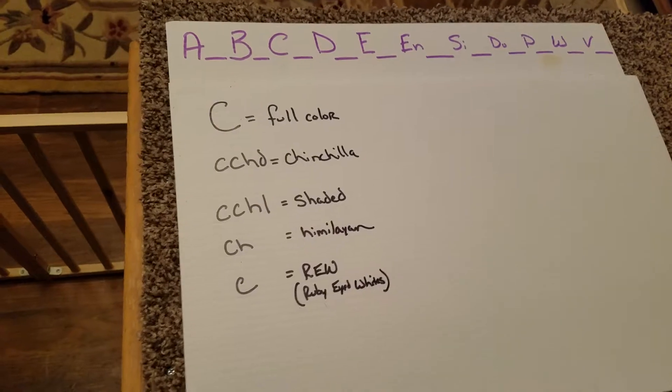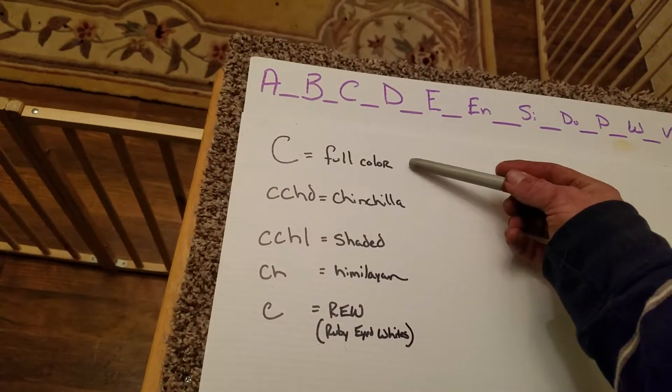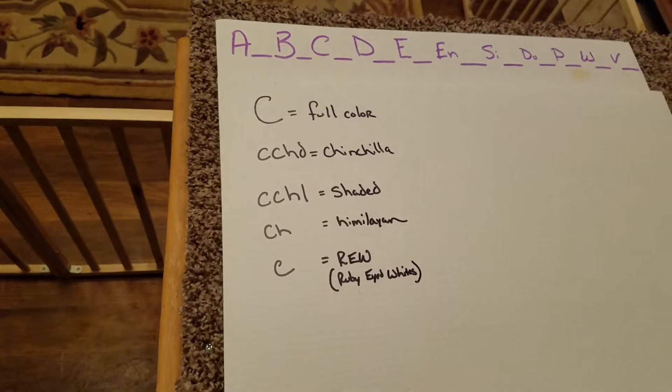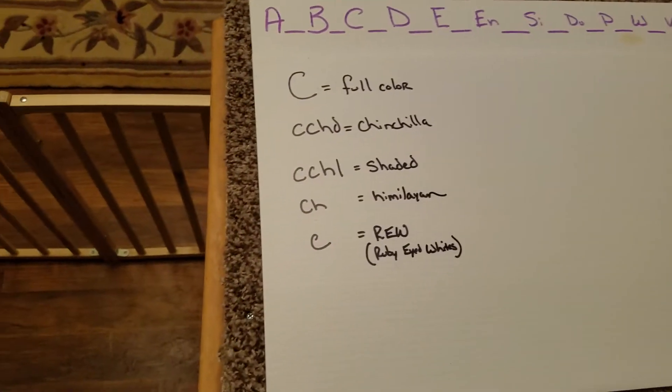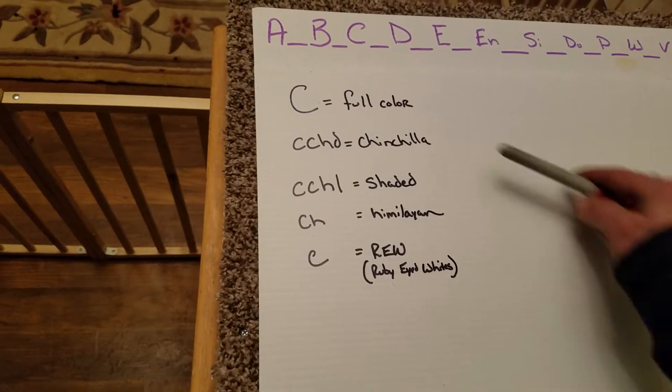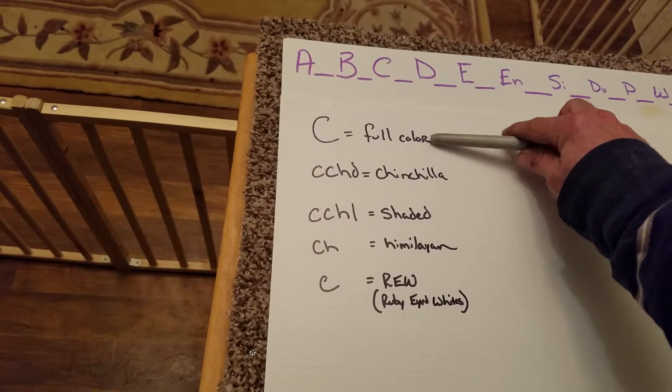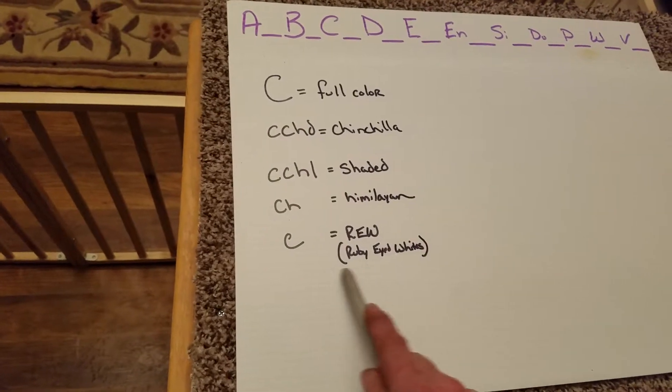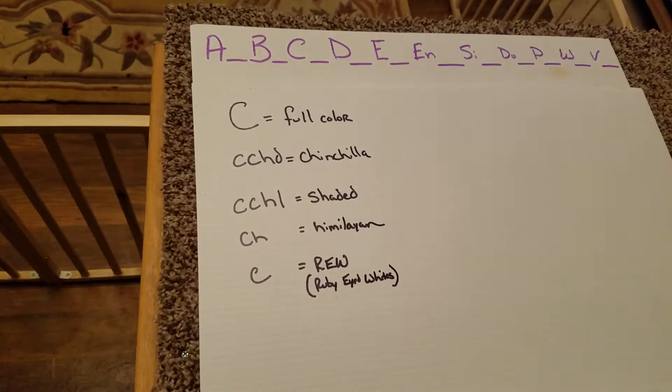So the C locus has more alleles than the A and B locus. I have them listed in order of dominance from the most dominant, which is a capital C, down to the most recessive, which is a lowercase c. We're going to talk about each of these in distinction here.